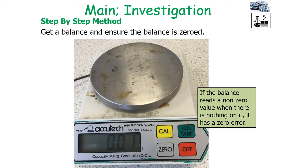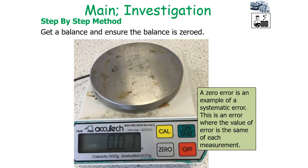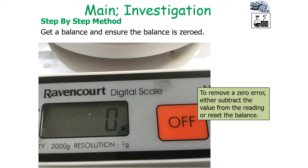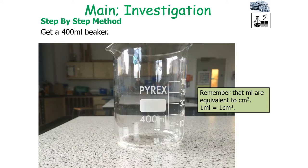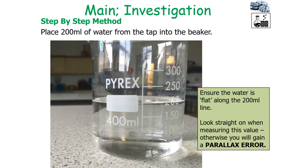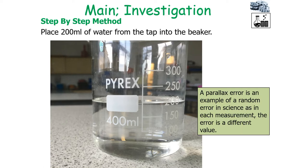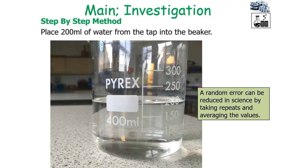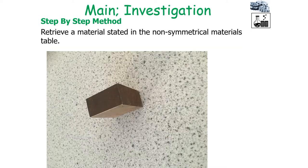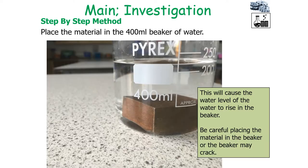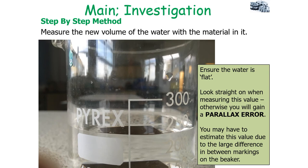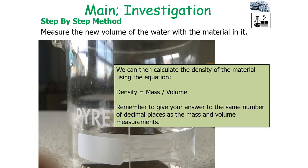Get a balance and ensure it is zeroed. If the balance reads a non-zero value with nothing on it, it has a zero error — a systematic error, which is an error of the same value in each measurement taken. To remove it, subtract the value from the reading or reset the balance. Remember to record mass results to the same resolution as the balance. Place 200 ml of water from the tap into the 400 ml beaker, looking straight on when measuring to avoid a parallax error. A parallax error is a random error, as each measurement has a different value of error; you can reduce random error by taking repeats and averaging. Place the material on the balance, measure its mass, then place the material in the beaker — the water level will rise. Always look straight on to avoid parallax error. The volume of the material equals the final volume minus the starting volume, then density equals mass over volume.